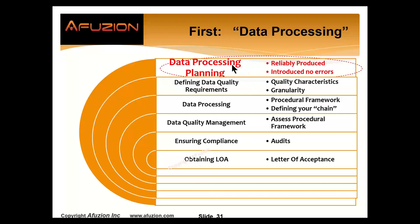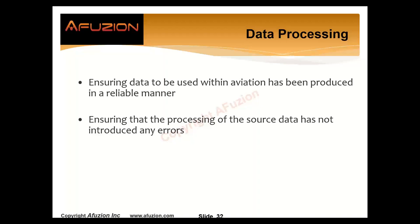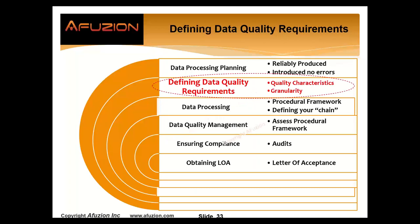Let's look at data processing. It's about ensuring that data used in aviation has been produced in a reliable manner and that processing of source data has not introduced any errors. Hopefully you find, detect, and report back any errors in the data you received. Your focus is on ensuring you don't introduce additional errors. After defining data processing planning, define the data quality requirements — the technical, assessable, verifiable quality characteristics of the data and its granularity. How accurate is the data? Meters, centimeters, feet?